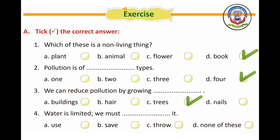Number 4 — water is limited. We must dash it. Options: A) use, B) save, C) throw, D) none of these. The right answer is save. We must save water because it is limited.